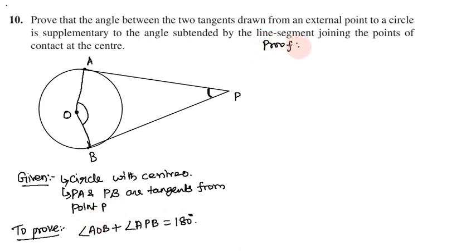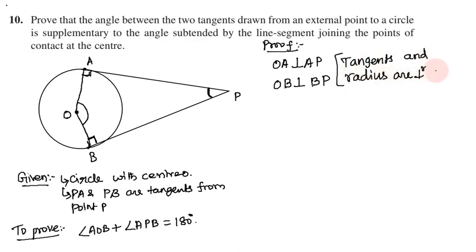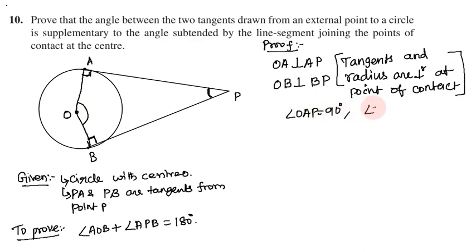To prove this, we use the property that a tangent is perpendicular to the radius at the point of contact. So OA is perpendicular to AP, and OB is perpendicular to BP. Therefore, angle OAP = 90 degrees and angle OBP = 90 degrees.